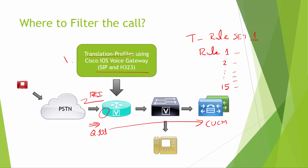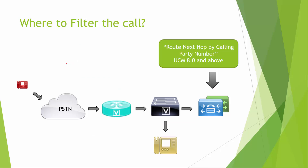So that's the first method — Cisco IOS voice gateway translation rules and profiles. The second method uses Unified CM to do call filtering. From Unified CM version 8.0 and above, there is a field called 'Route to Next Hop by Calling Party Number', available in the translation pattern.